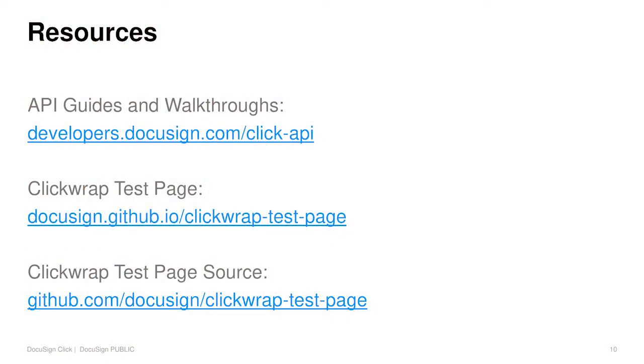I want to link back to some of these resources. If you follow through with any of the other API guides or walkthroughs, the Qlik API guide on developers.docusign.com is pretty amazing. As well as the Qlik wrap test page by Larry Kluger — also amazing. The source for it is very cool to see as far as how you might do your own Qlik wrap.